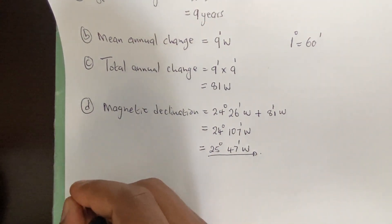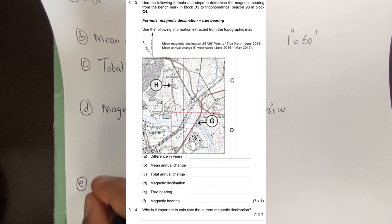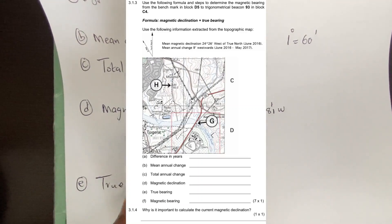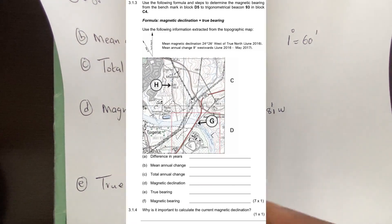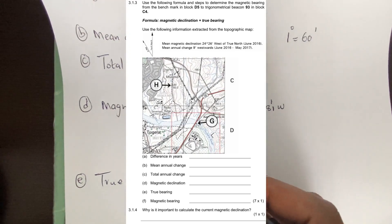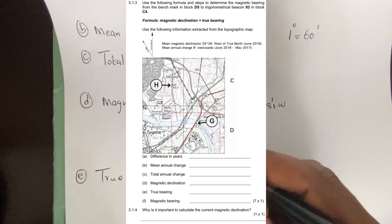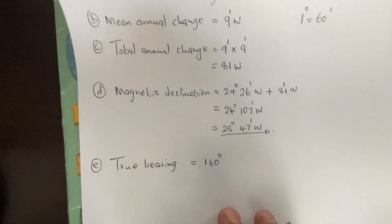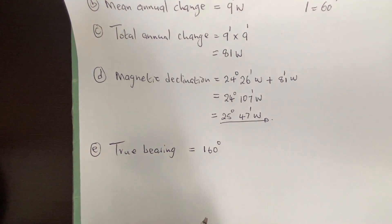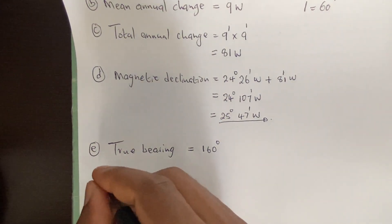Step E requires the true bearing. Since this question is digital, I'm going to assume my true bearing as 160 degrees. Step F is finding the total magnetic bearing.